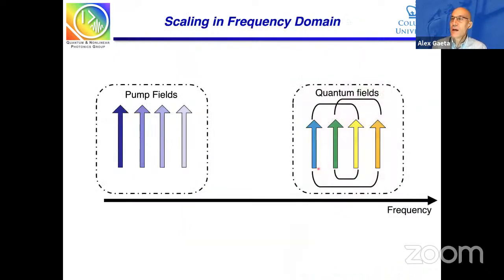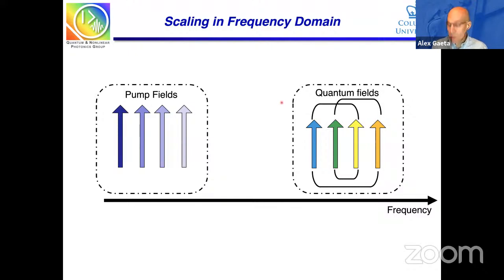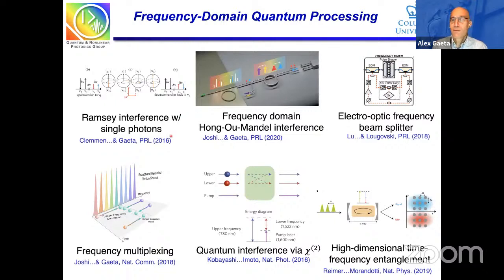This is what motivated us — to try to find a different domain for quantum information processing, and instead work in the frequency domain. The beauty of working in the frequency domain is that losses don't necessarily scale up in size. I can keep adding frequencies to my system, but all the components and waveguides, as long as they're designed right, can continue to operate. This may allow you to beat the scaling issues that occur in the spatial domain and the time domain.